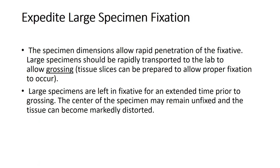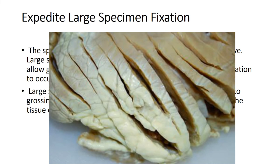Expedite large specimen fixation. The specimen's dimensions affect how rapidly fixative can penetrate. Large specimens should be rapidly transported to the lab. If left in fixative for an extended time before grossing, the center of the specimen may remain unfixed and tissue can become markedly distorted. To avoid this, large specimens should be book-sliced so fixative can penetrate into the deeper layers and reach the center of the tissue.